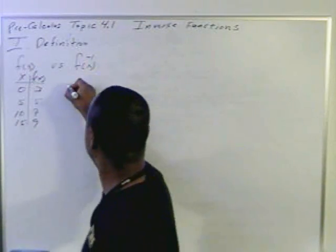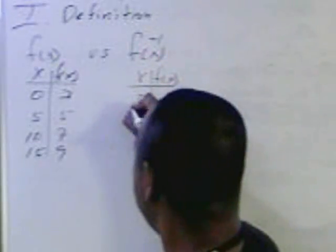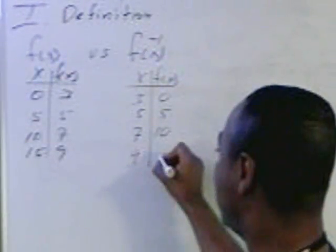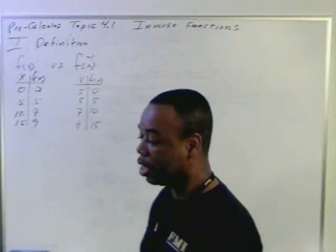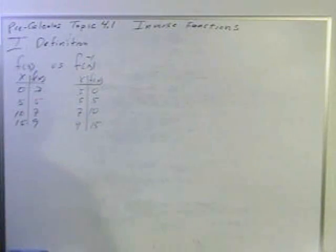So if we had a function here and the input was 0, output 3; input 5, output 5; input 10, output 7; input 15, output 9, the inverse function would do this: 3 as the input, 0 as the output; 5 will be the input, 5 will be the output; 7 will be the input, 10 as an output; 9 as an input and 15 as an output. Now that's what it physically does. It actually changes the input to the output and output to the input. So what we're getting here is an exchange: the domain and the range exchange roles.